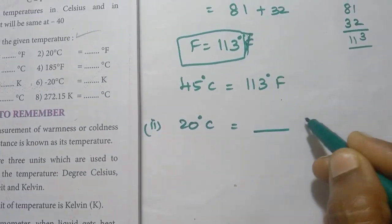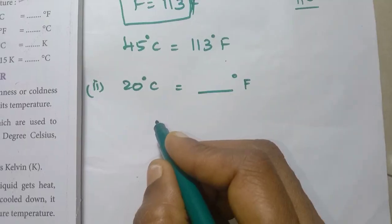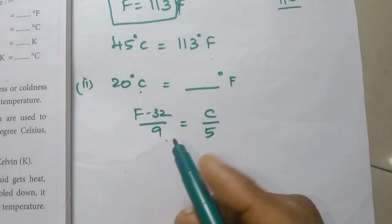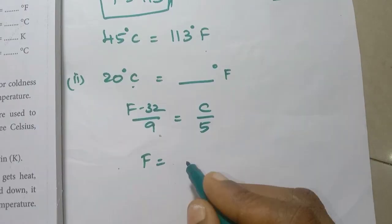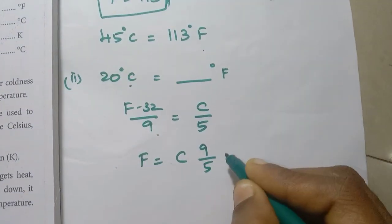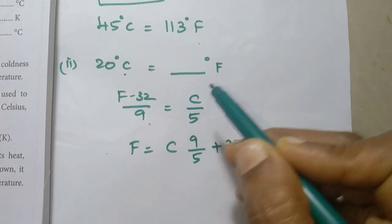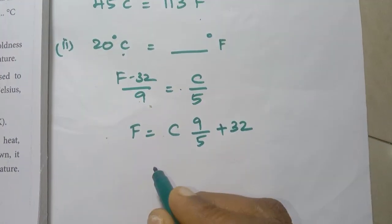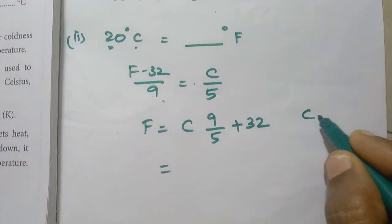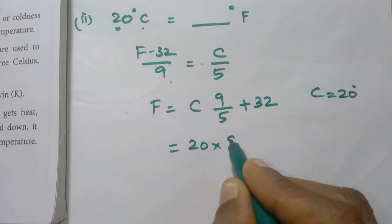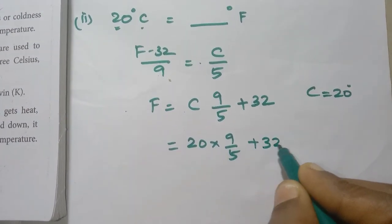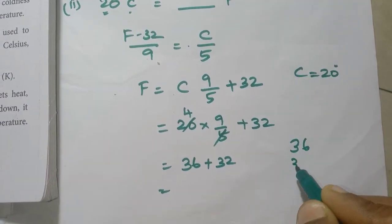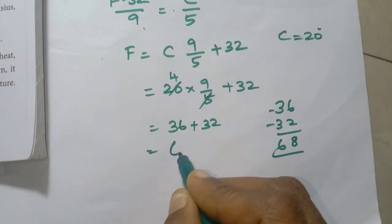Second problem: 20 degrees Celsius equals how many degrees Fahrenheit? Using the formula F equals 9C by 5 plus 32, substituting C equals 20: 20 into 9 by 5 plus 32. 4 times 9 is 36, and 36 plus 32 equals 68 degrees Fahrenheit.